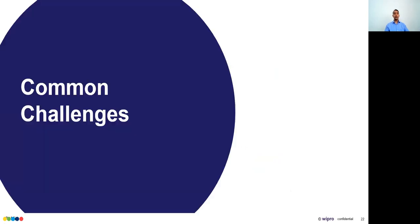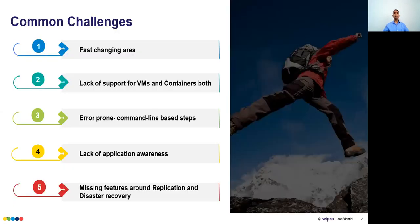Common challenges: first, it's a fast-changing area — a POC done one month ago may not reflect the current state since new features and bug fixes are constantly introduced. Check the product roadmap. If nine out of ten criteria are met, verify whether that tenth feature is on the roadmap before rejecting the solution.